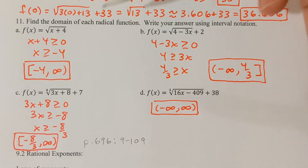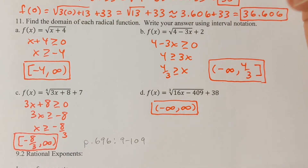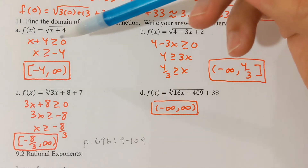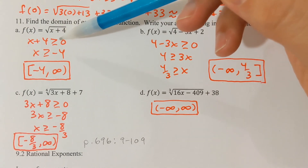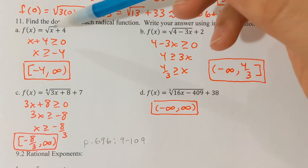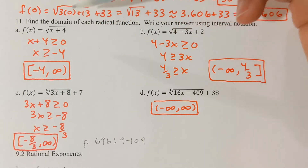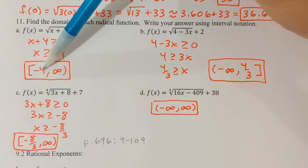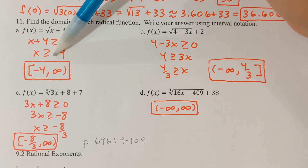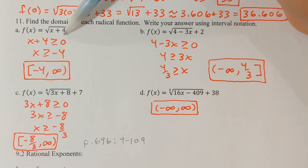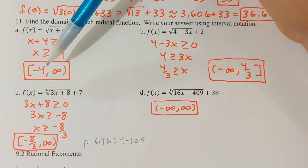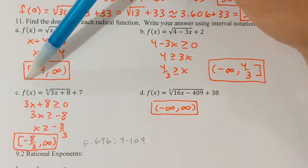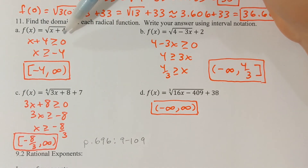Problem 11 is the last one in the section: find the domain of each radical function and write your answer using interval notation. The square root of a negative is not a real number, so I want the expression underneath a square root to not be negative. For f(x) = √(x+4), I set x plus 4 greater than or equal to 0 and subtract 4 from both sides. Anything that is negative 4 or bigger is okay. Using interval notation, the answer is negative 4 to infinity with a bracket by negative 4.